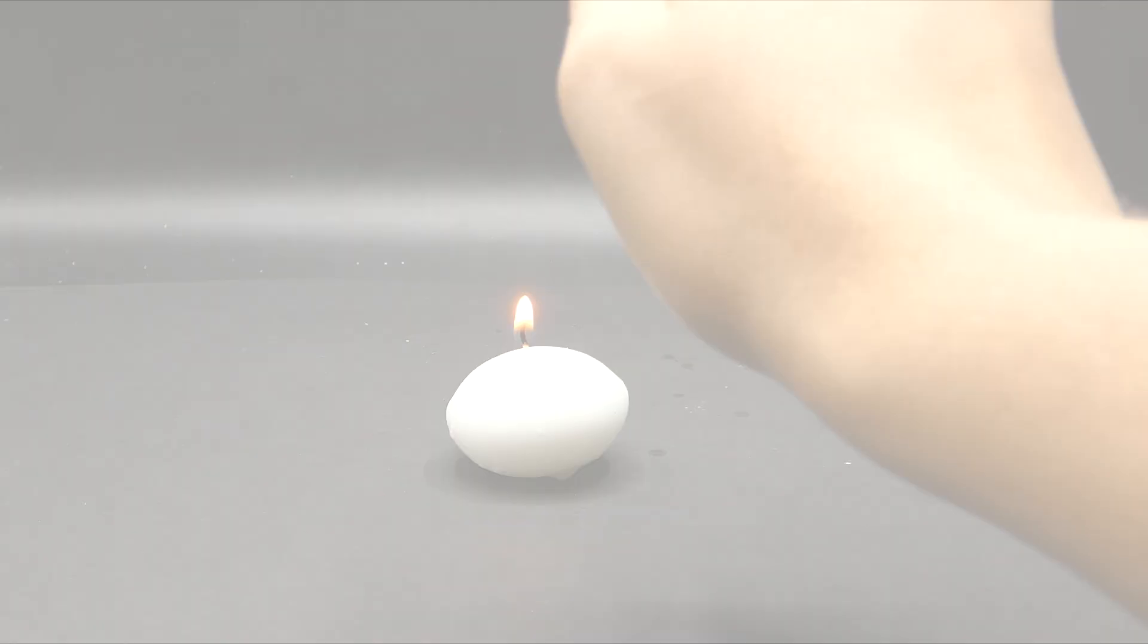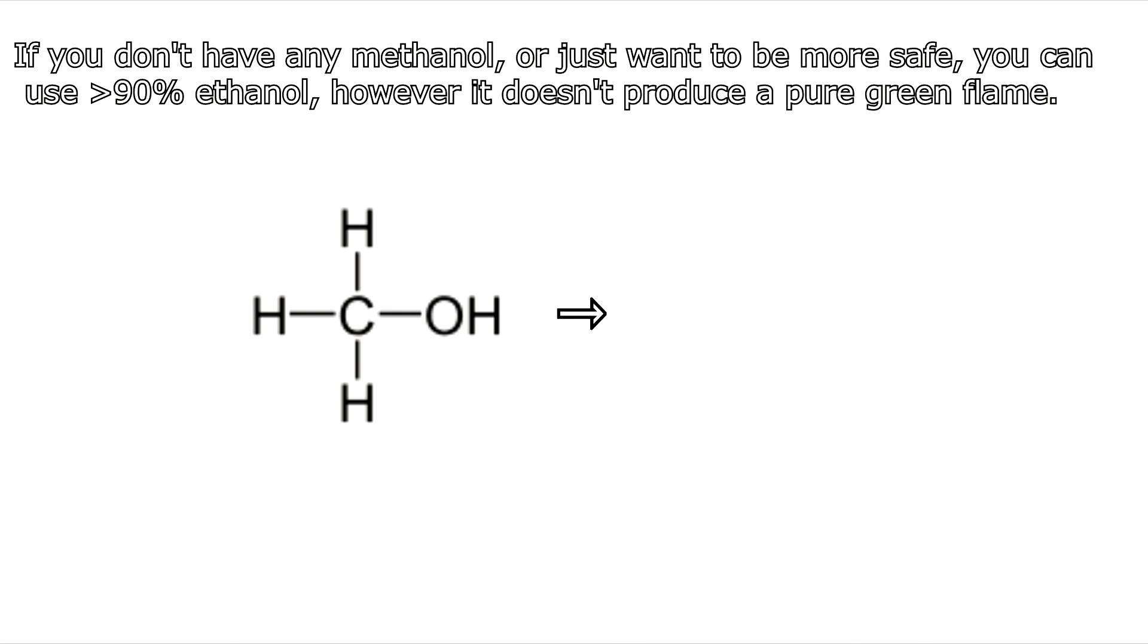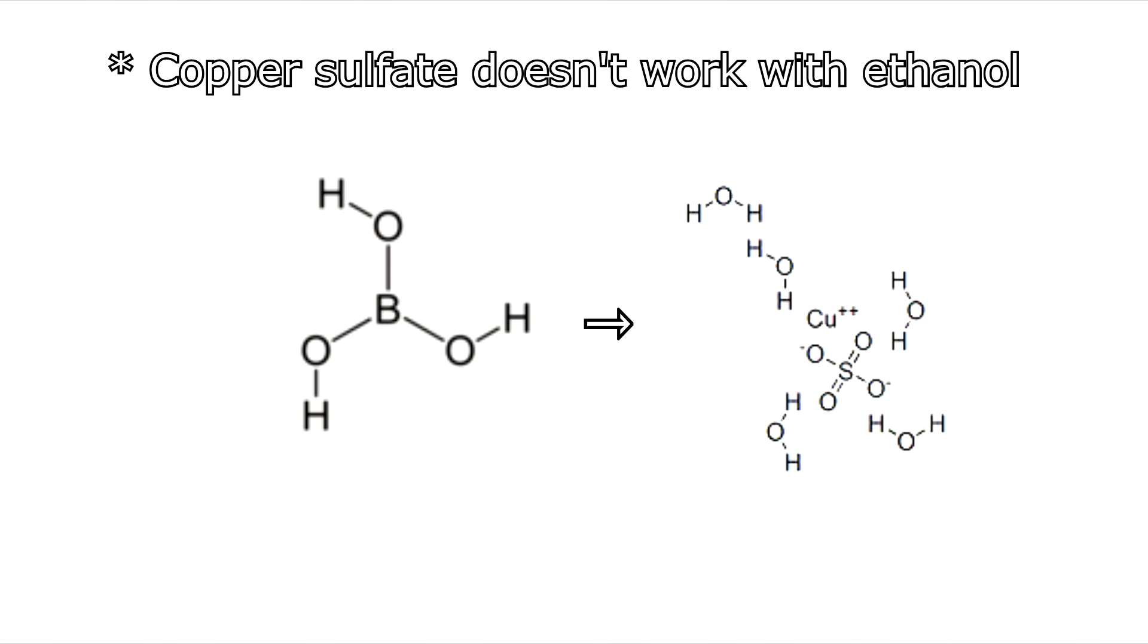If you don't have some of the materials you can substitute methanol with ethanol and boric acid with a copper salt such as copper sulfate pentahydrate, although the results will be slightly less impressive.